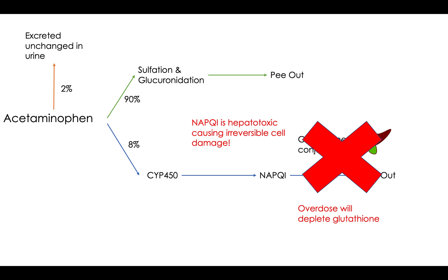So this is the pathway — it's pretty simple when you look at it this way. Just think of acetaminophen going through CYP450, breaking down into NAPQI, and then using glutathione to pee it out. But in an overdose, your liver won't be able to provide the glutathione it needs, so you get a buildup of NAPQI.